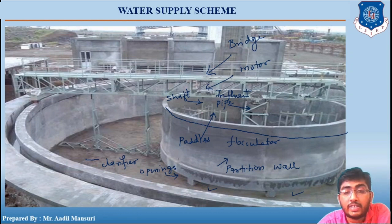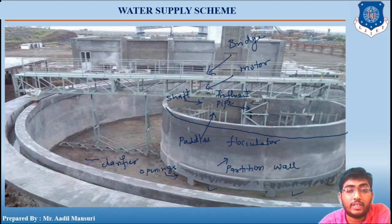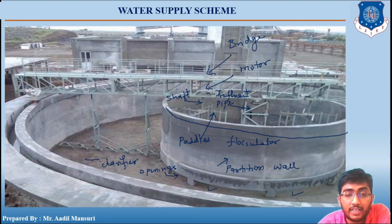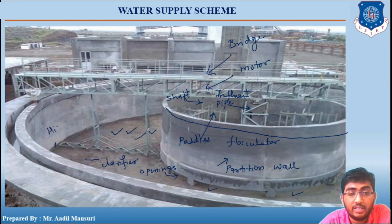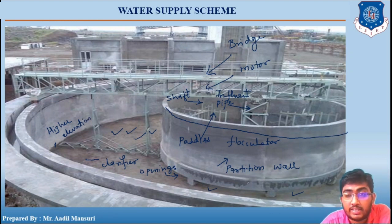The flocs being used in the flocculator will settle after capturing the suspended solids, and these flocs will settle at the bottom of the clarifier. There is a slope at the bottom of the clarifier - the outer portion is at a higher elevation and the center portion is at a lower elevation.